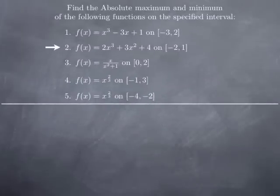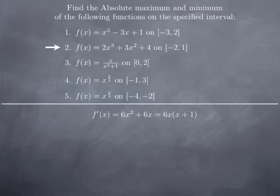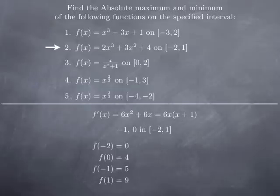The second example is the function 2x³ + 3x² + 4 on the interval [-2, 1]. Again, this is a polynomial, so the derivative is defined everywhere, and therefore critical values are only the zeros of the derivative. The derivative is 6x² + 6x, factoring out 6x, we get 6x(x + 1). So we have two critical values, 0 and -1, both of which are in the interval [-2, 1]. We evaluate the function at -2, at -1, at 0, and at 1.